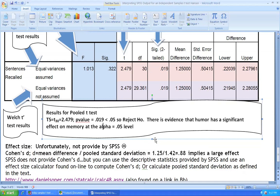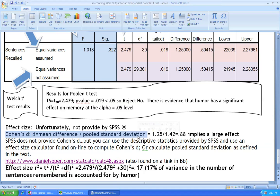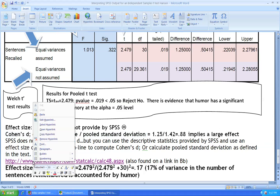Unfortunately, SPSS output does not give us measures of effect size. Cohen's D is found by taking the mean difference divided by the pooled standard deviation. The pooled standard deviation is also not provided by SPSS. However, this website does provide a place where we can compute the effect size Cohen's D.